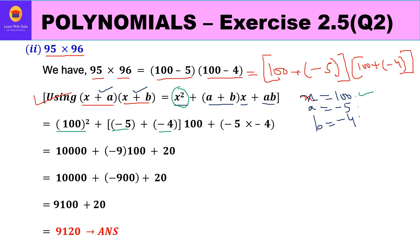Continuing: a × b = (−5) × (−4). So we get 10,000 + (−5 − 4) × 100 + (−5)(−4), which is 10,000 + (−9)(100) + 20 = 10,000 − 900 + 20 = 9,100 + 20 = 9,120. That is the product of 95 × 96, found using Identity 5 without direct multiplication.